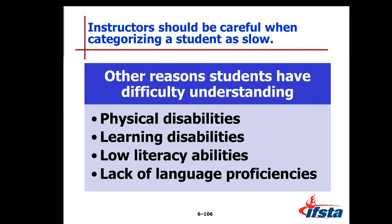You should be careful when categorizing a student as slow. There are a few other reasons that students have difficulty understanding: they have physical disabilities, learning disabilities, low literacy abilities, or a lack of language proficiency. Be careful when putting students into a category because that may not turn out to be the case.